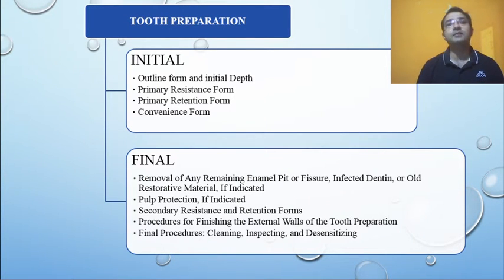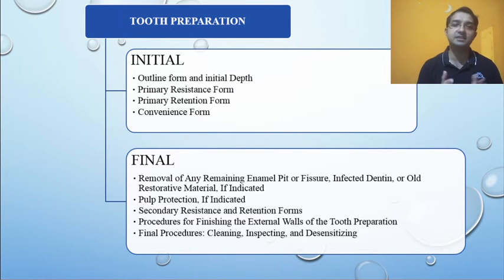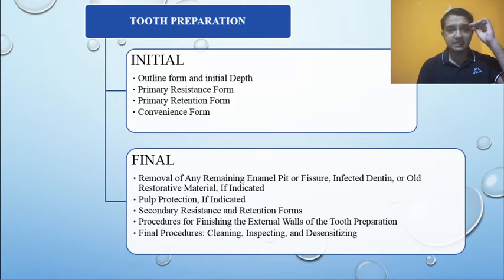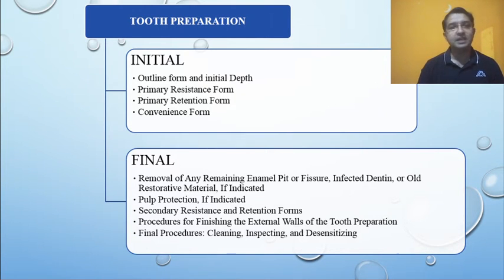The fundamentals of cavity preparation are divided into two categories: initial cavity preparation and final cavity preparation. The initial cavity preparation is further divided into outline form, initial depth, primary resistance form, primary retention form, and convenience form. Many students tend to forget the word 'initial depth,' which is very important. The word 'primary' is also very important because you also have secondary resistance and retention form that comes into the final step.